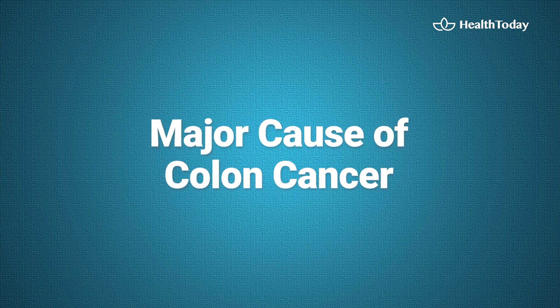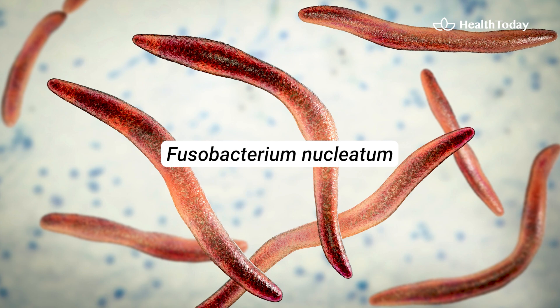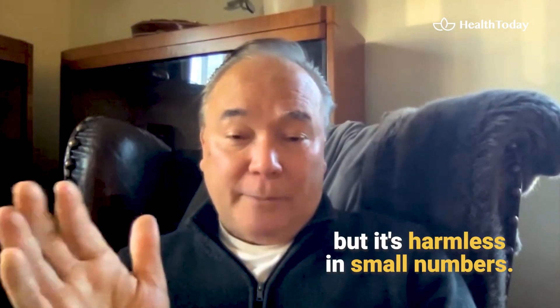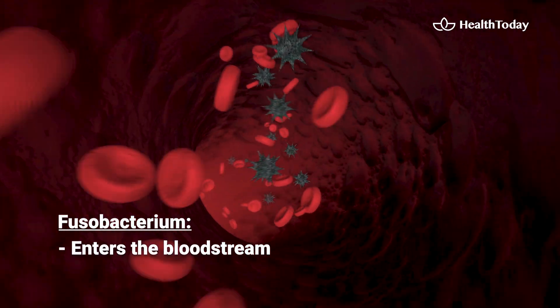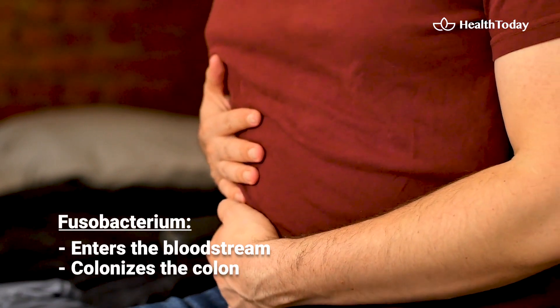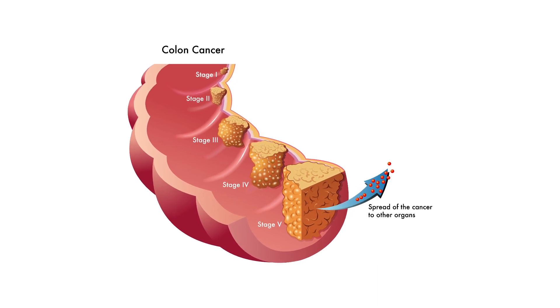Some of the most exciting science involves a microbe in the mouth called Fusobacterium nucleatum. Most people have a little bit of it, and it's harmless in small numbers. But if you have bleeding gums when you floss, gingivitis, or periodontitis, the number of Fusobacterium goes sky high. It then enters the bloodstream and colonizes the colon, and the evidence is getting very good that it is a major cause of colon cancer.